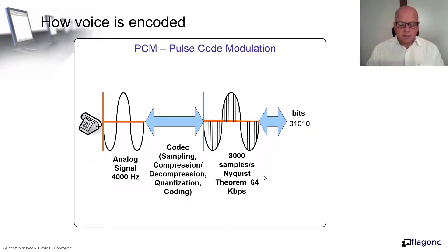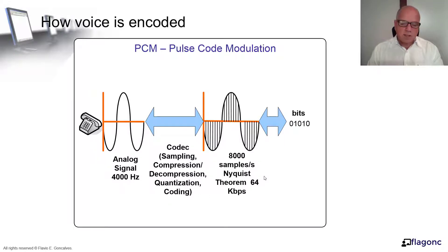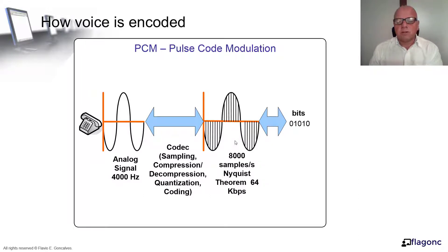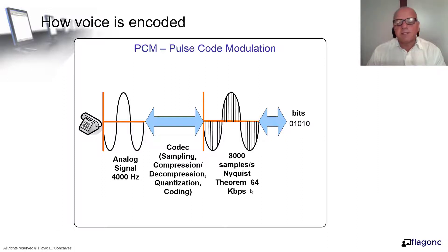How voice is encoded: the audible voice range is from 20 to 20,000 hertz, but most of the voice is in the range of 4,000 hertz. You can take an analog signal, filter it to 4,000 hertz with low-band and high-band filters, then send it to a processor. The processor will sample, compress, decompress, quantize, and encode the signal into a digital signal. According to the Nyquist theorem, we need twice the bandwidth to digitally encode an analog signal — that's why we have 8,000 samples per second for 4,000 hertz, and this consumes 64 kilobits per second.